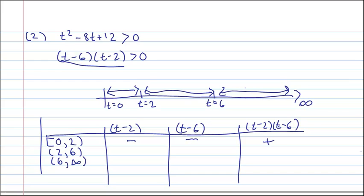For the next interval, I have to plug in a number between 2 and 6. I'll plug in 3. So, this one will give me a positive value. This one will give me a negative value. So, that gives me a negative velocity. Therefore, this interval, from 2 to 6 for time, will not be included in my answer.